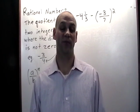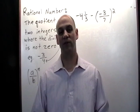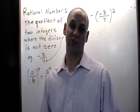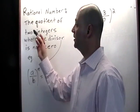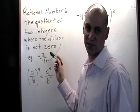Hi everyone and welcome back to another episode of the easy video learning series from plentyoftutors.com. Today we're going to be talking about operations with rational numbers. So first let's start with the definition of a rational number. It is the quotient of two integers where the divisor is not zero.